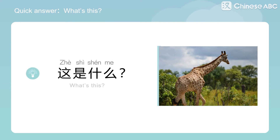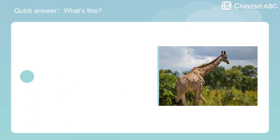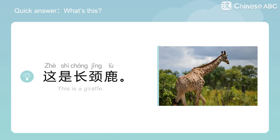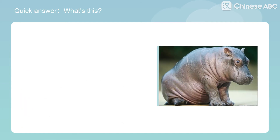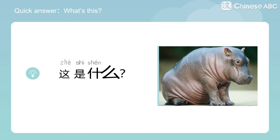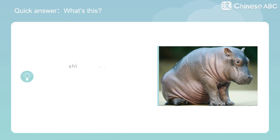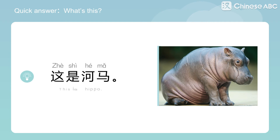這是什麼? What's this? 這是長頸鹿 — This is a giraffe. 這是什麼? What's this? 這是河馬 — This is a hippo.